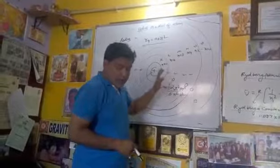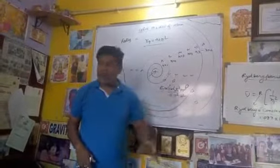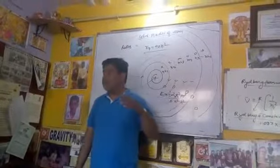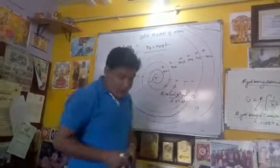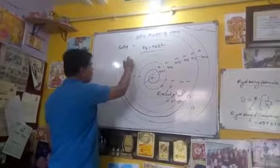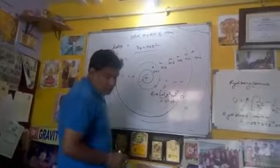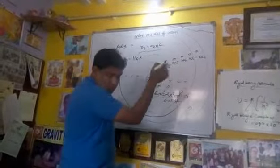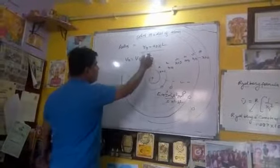To calculate the velocities of electrons in different orbits, the formula is v_n equals v₀ times z upon n, where z is the atomic number.